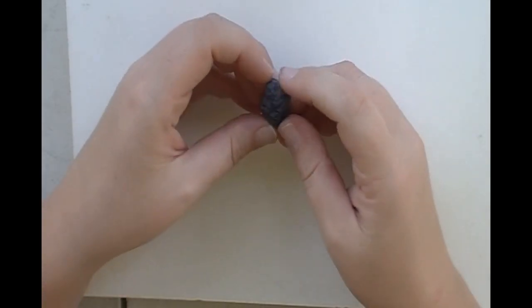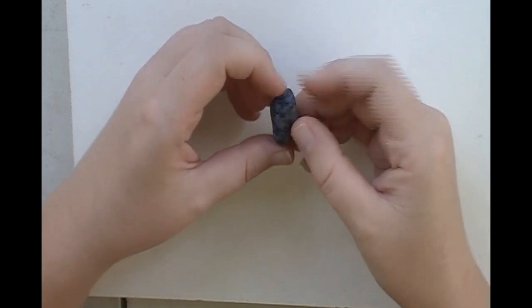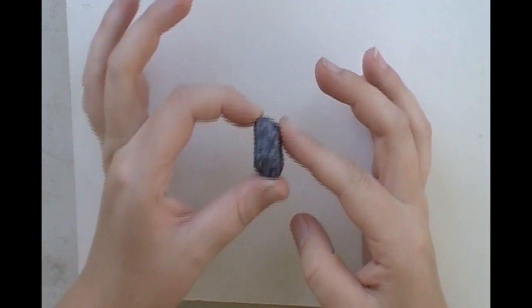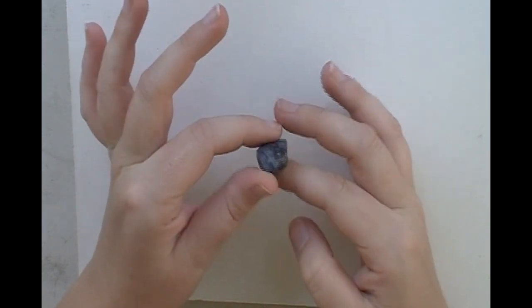The first thing you want to do is pick up your irregular shaped gemstone. This is a piece of sodalite. Check out its natural shape and figure out which way you want it to go.